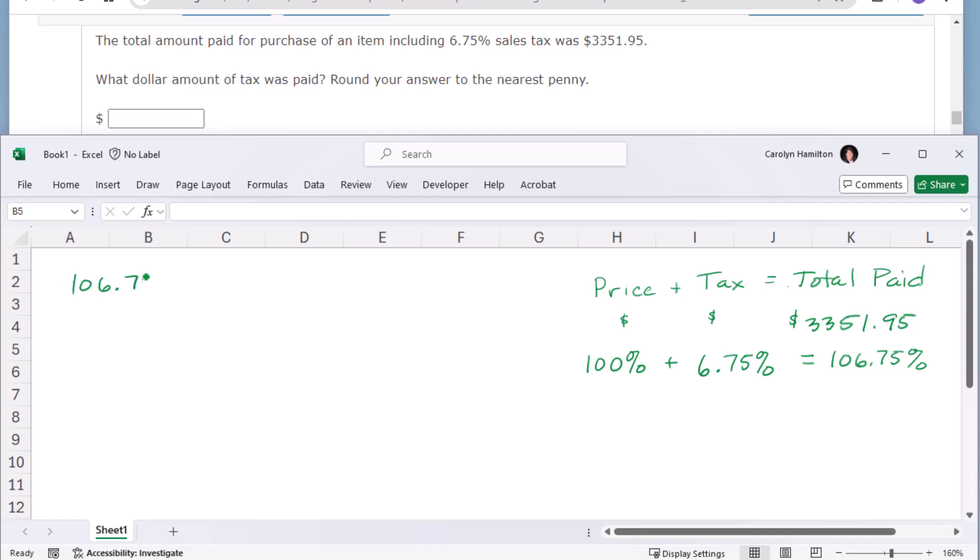So 106.75 compares to 100, the same way that my total paid compares to the base, which is X. X, multiply across, multiply across, and then divide by 106.75.